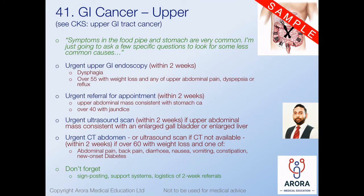Moving on to GI cancer, starting with the upper GI system. Patients come in with symptoms and we may need to go through red flags. Signposting is important: symptoms in the food pipe and stomach are very common, and you're asking specific questions to rule out less common causes. There are four things you can do on an urgent two-week basis if suspecting upper GI cancer. Number one: direct referral for an upper GI endoscopy within two weeks - if a patient has dysphagia, or if someone is over 55 with weight loss and any one of upper abdominal pain, dyspepsia, or reflux.